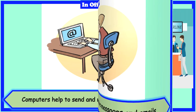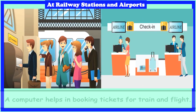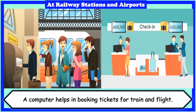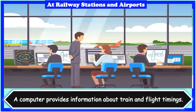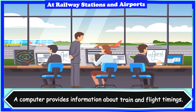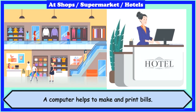At railway stations and airports, a computer helps in booking tickets for trains and flights. A computer provides information about train and flight timings. At shops, supermarkets and hotels, a computer helps to make and print bills.